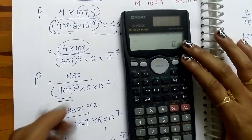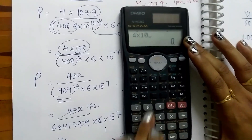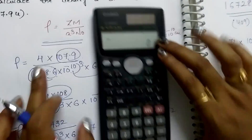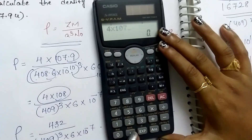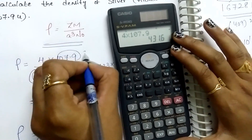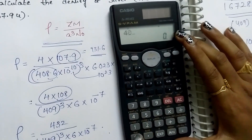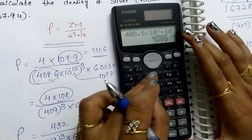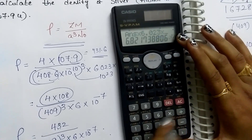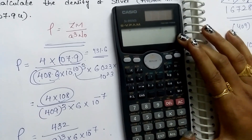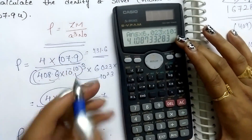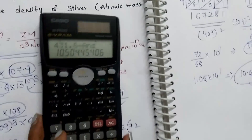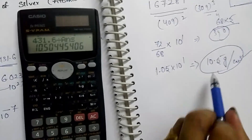Let us check this answer using a calculator. 4 × 108 we got 432. 4 × 107.9 is 431.6. Dividing 431.6 by (408.6 × 10⁻¹⁰)³ × 6.023 × 10²³ — the calculator gives the denominator value, and we get 10.5. Students, our answer is 10.5. That's it!